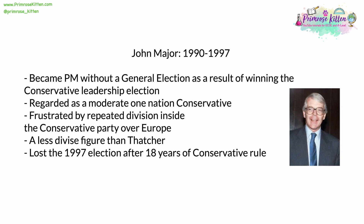In 1990, John Major won the leadership election to succeed Margaret Thatcher and remained as Prime Minister until 1997. He therefore became Prime Minister without a general election, as a result of winning this leadership election. John Major was and is regarded as a moderate, one-nation Conservative rather than a divisive right-wing figure. He was frustrated by repeated division inside the Conservative Party over Europe — the same issue that had brought down his predecessor. Mr Major was regarded as much less divisive and combative; he sought to build consensus rather than divide and rule his cabinet. Even today, Major is regarded as an honest man who did his best in difficult circumstances, and is widely popular even outside his own party.